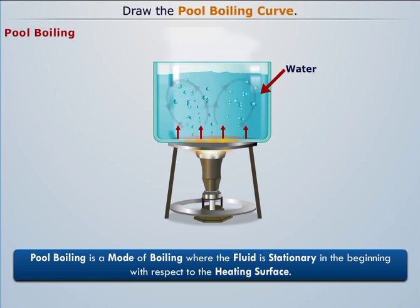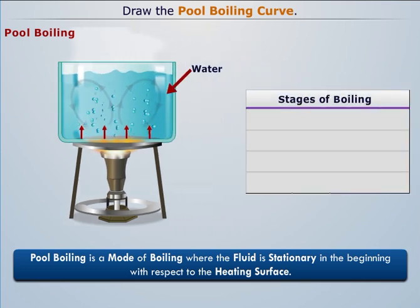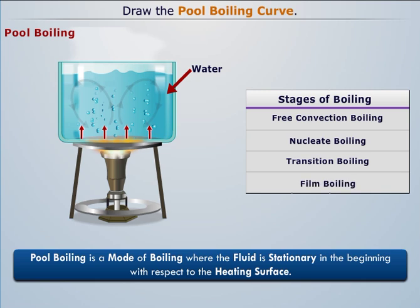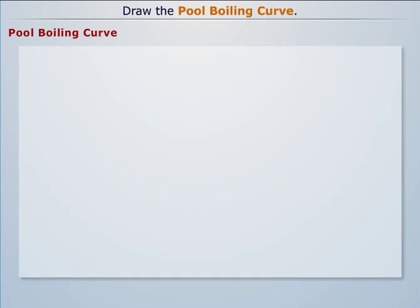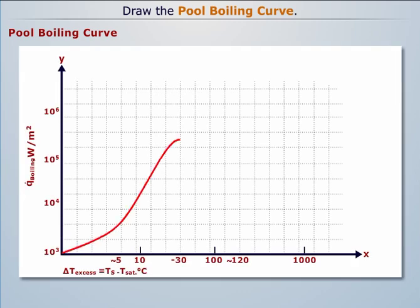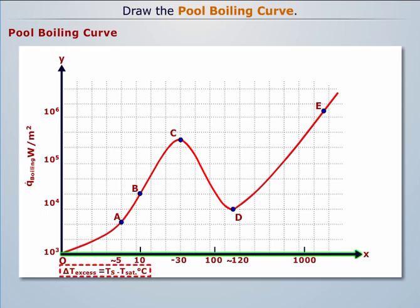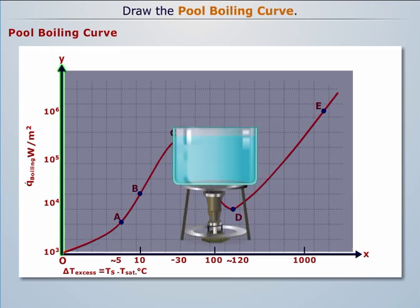Pool boiling takes place in different stages: free convection boiling, nucleate boiling, transition boiling, and film boiling. These different stages can be easily plotted on a heat flux versus temperature plot. The x-axis represents the difference between the current temperature and the saturation temperature of water, represented by Delta T excess. The y-axis represents the heat transfer to the water per unit surface area of the vessel, which is the heat flux q-dot.